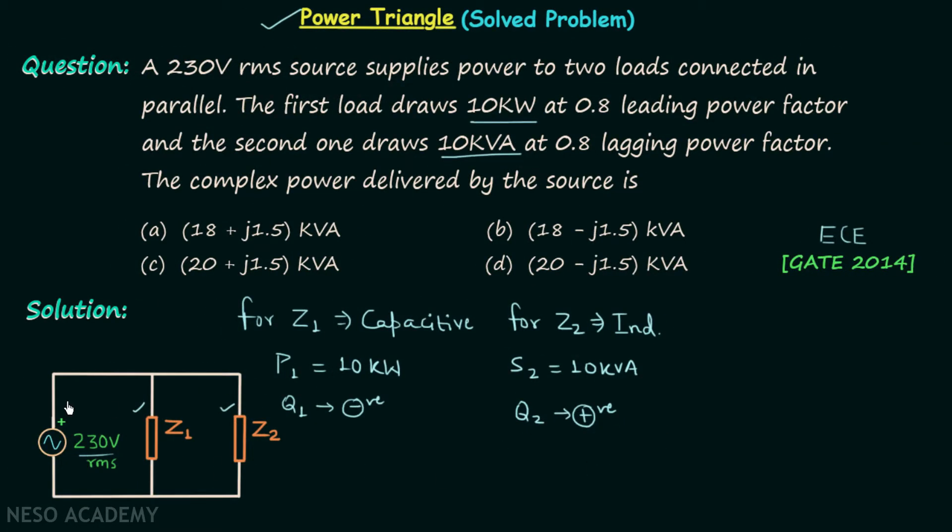Now we will assume that the source is providing the complex power S. This load is delivered the complex power equal to S1 and this load is delivered the complex power equal to S2. According to the principle of conservation of AC power, complex power S will be equal to S1 plus S2. This is according to the law of conservation of AC power. If we can have S1 and S2, we can have complex power S which we want to calculate in this problem.